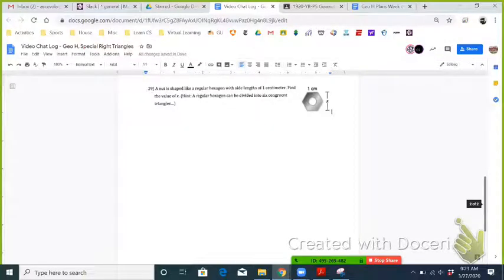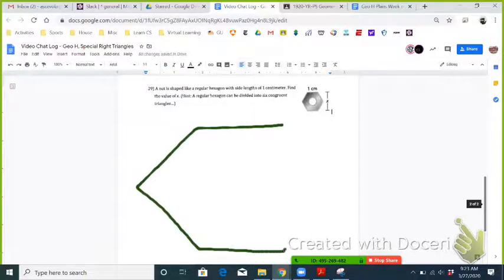We have a nut shaped like a regular hexagon with side lengths of one centimeter. If I draw that over here a little bigger, because we're going to divide this up into triangles, we know that all the side lengths are one.